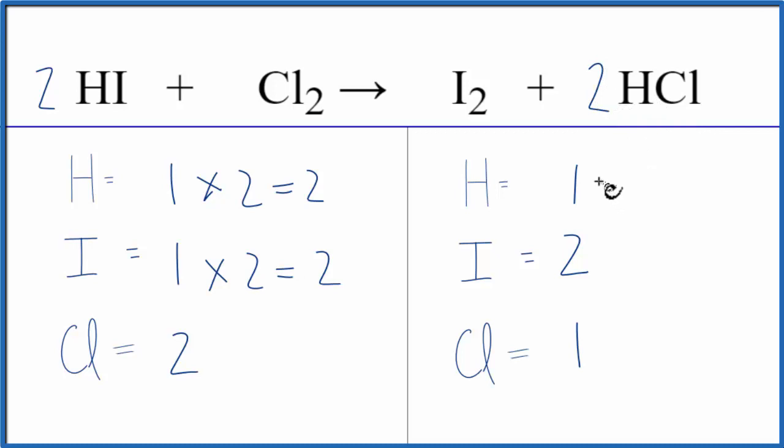one times two for the hydrogen, that equals two. So those are balanced. And this two, it applies to everything here. So one chlorine times two, that'll give us two. Those are balanced. Now everything's the same on both sides. This equation is balanced.